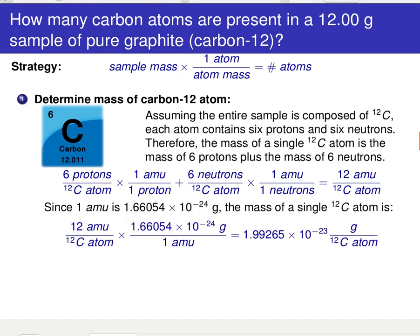Then we can use our conversion factor that one amu corresponds to 1.66054 times 10 to the minus 24 grams. So then we can take our 12 amu, use this amu to grams conversion factor, and find out that each individual carbon atom is weighing on the order of almost 2 times 10 to the minus 23.